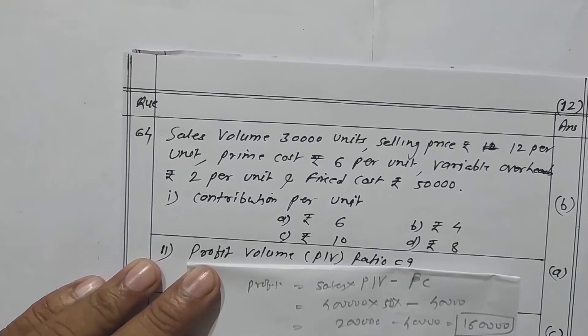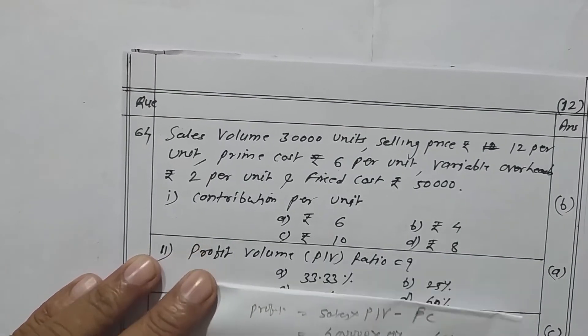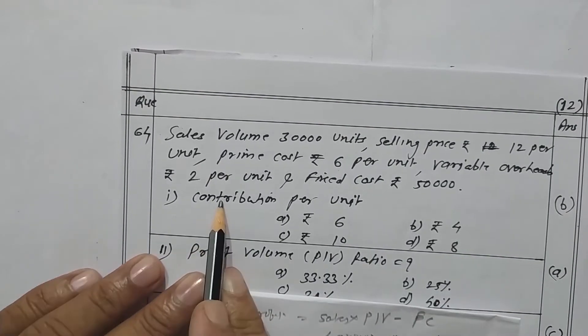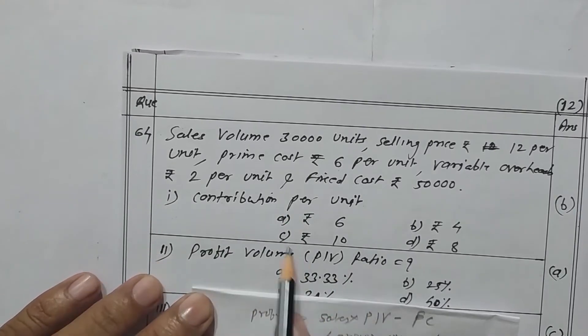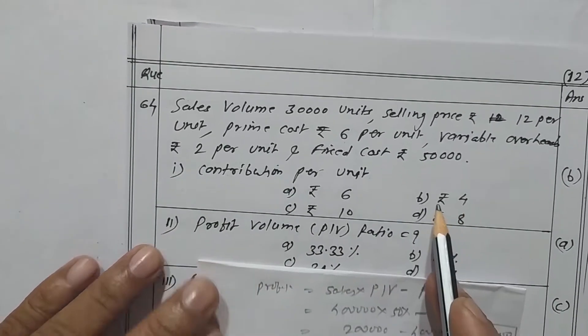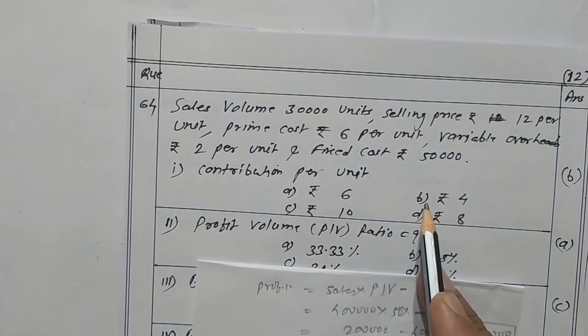The first question asks for contribution per unit. The answer is rupees 4. Option B is correct.